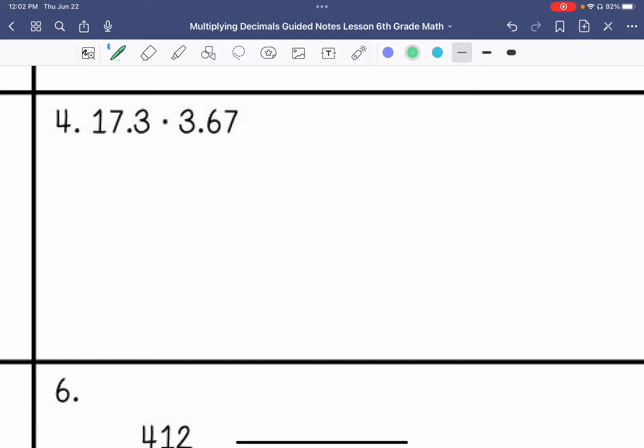Alright, number 1, or sorry, number 4. I don't know where I got number 1. 17.3 times 3.67. So this one has quite a few steps. 7 times 3 is 21. 7 times 7 is 49. Plus 2 is 51. And then 7 times 1 is 7. Plus 5 is 12.